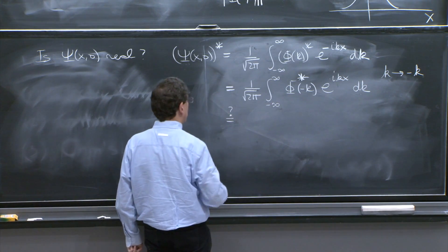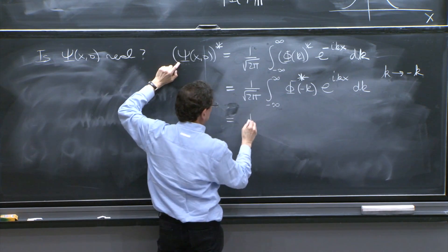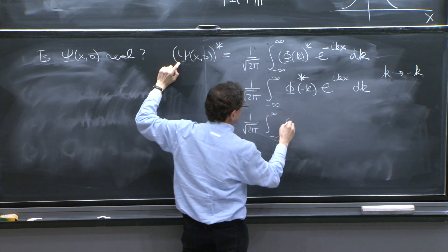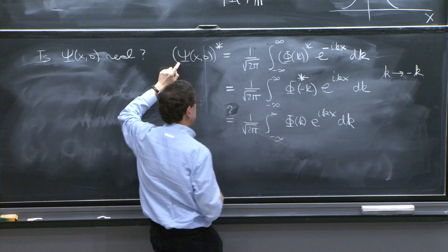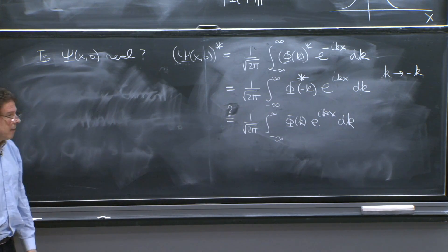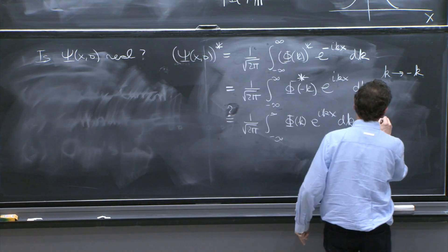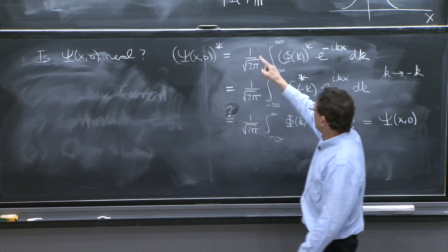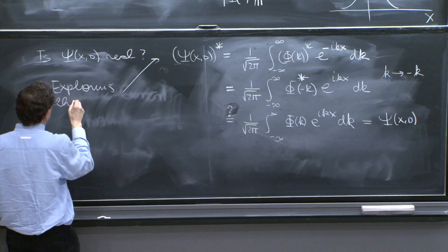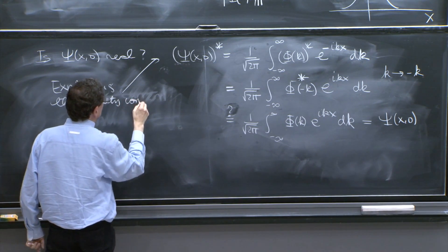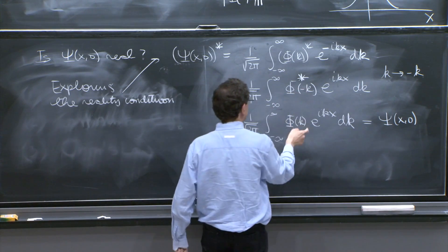Is this equal to, or what is the condition for psi to be real? Is this equal to 1 over 2 pi integral phi of k e to the ikx dk? Is that equal to it? That would mean that psi of x0 is real, because this thing is just psi of x and 0. So this is a question mark, this is a condition. So here you could say exploring the reality condition. When is psi of x real?